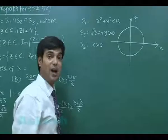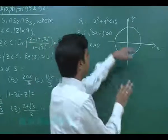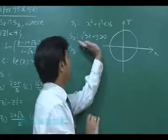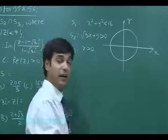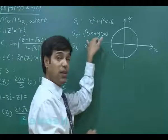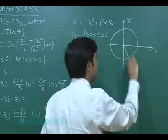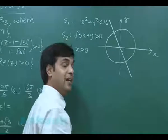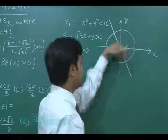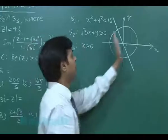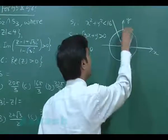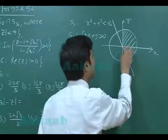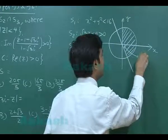Converting to Cartesian form: S1 is the disk x² + y² < 16. The line √3·x + y = 0 has slope −√3, which makes an angle of 60° (numerically). The condition √3·x + y > 0 defines one half-plane, and x > 0 defines the right half-plane. We can trace the required region S geometrically.